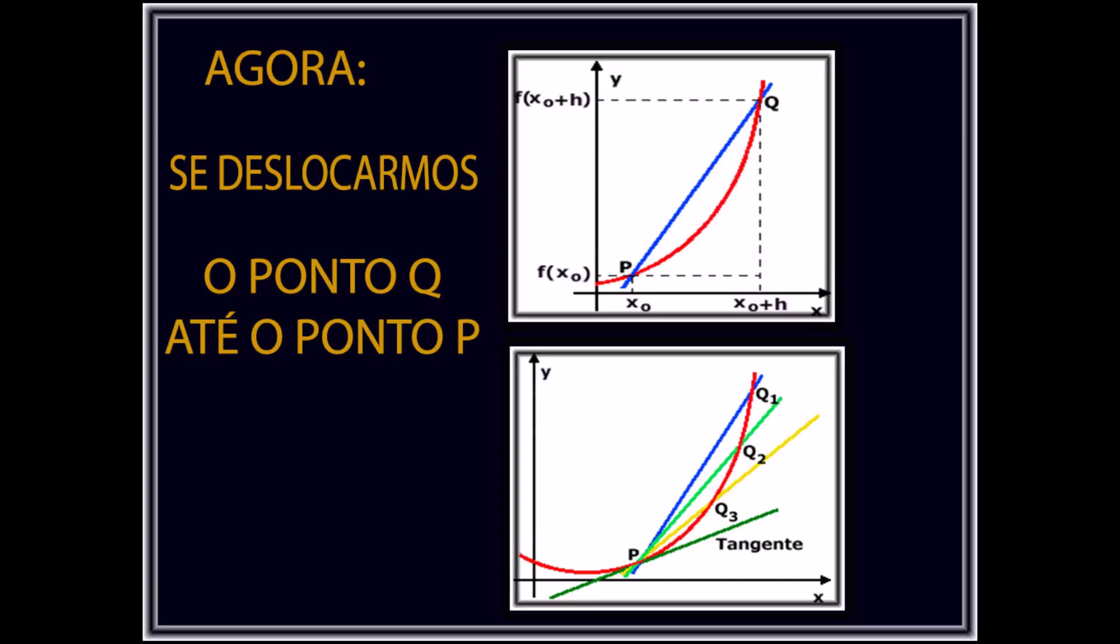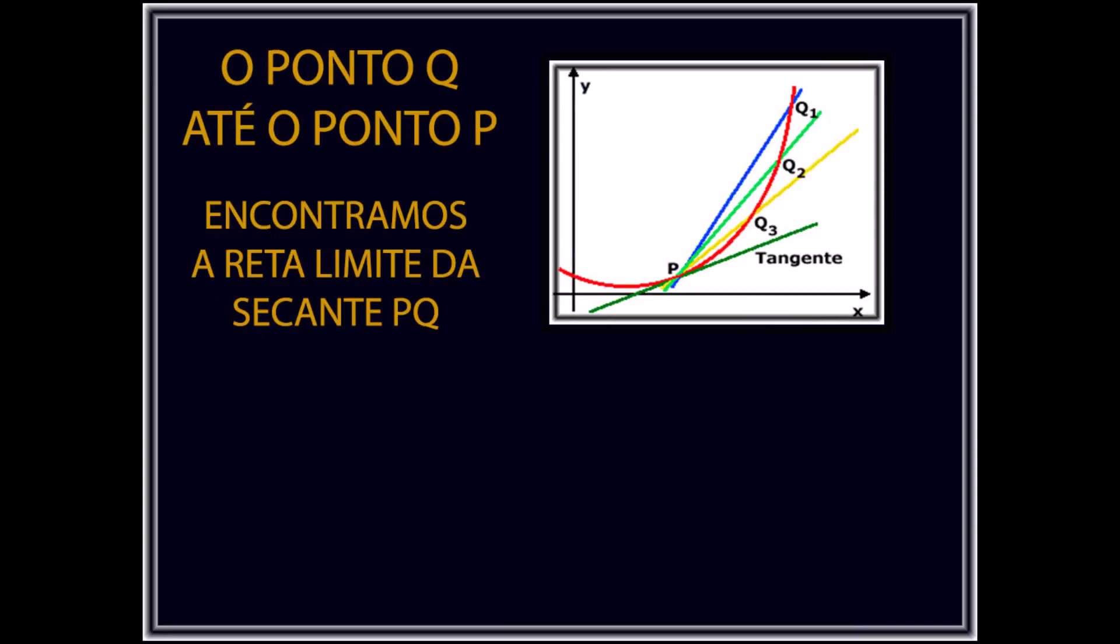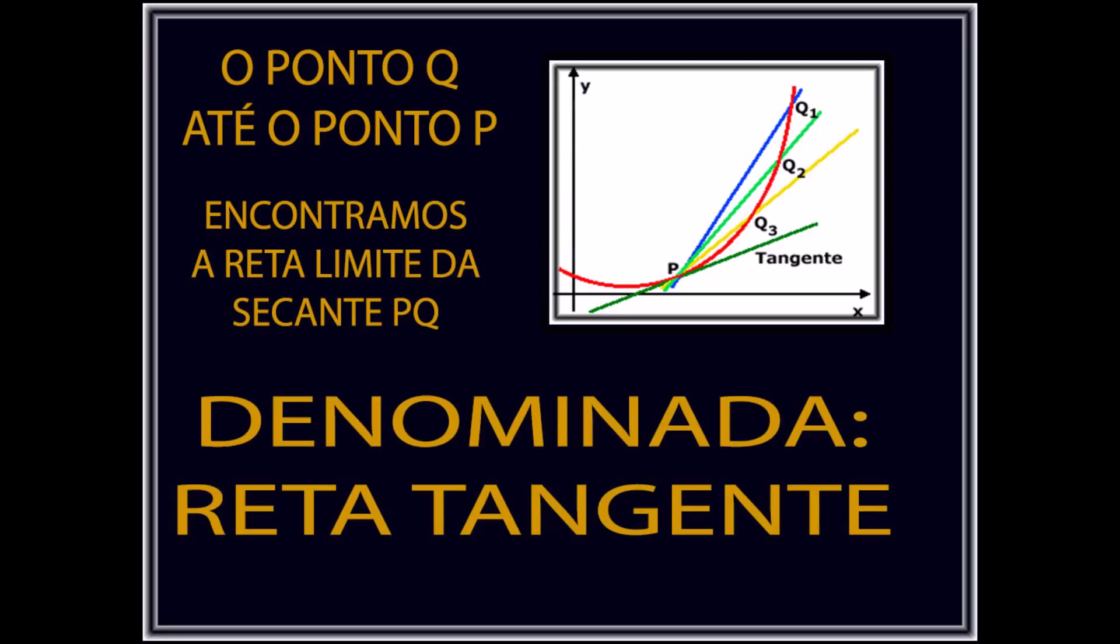Agora, se deslocarmos a secante variável ao longo da curva com P tendendo a Q, encontraremos a reta limite da secante PQ, denominada reta tangente à curva.